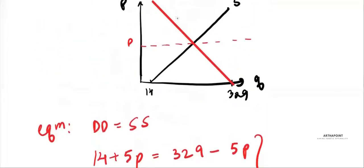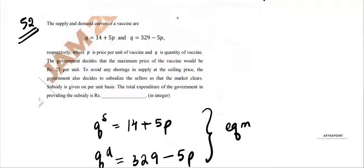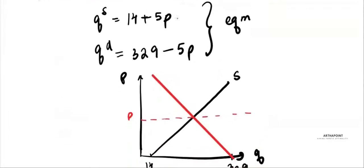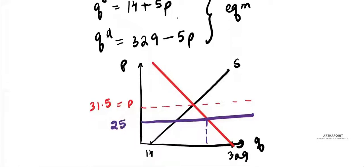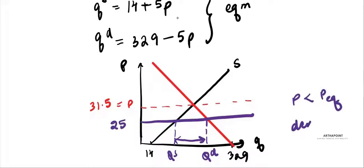Now let's think about what happens when the government puts a maximum price. The equilibrium is at 31.5, but the government says the maximum price that can be charged is 25. At this maximum price, demand will increase but supply will decrease, so there will be a shortage of the vaccine.